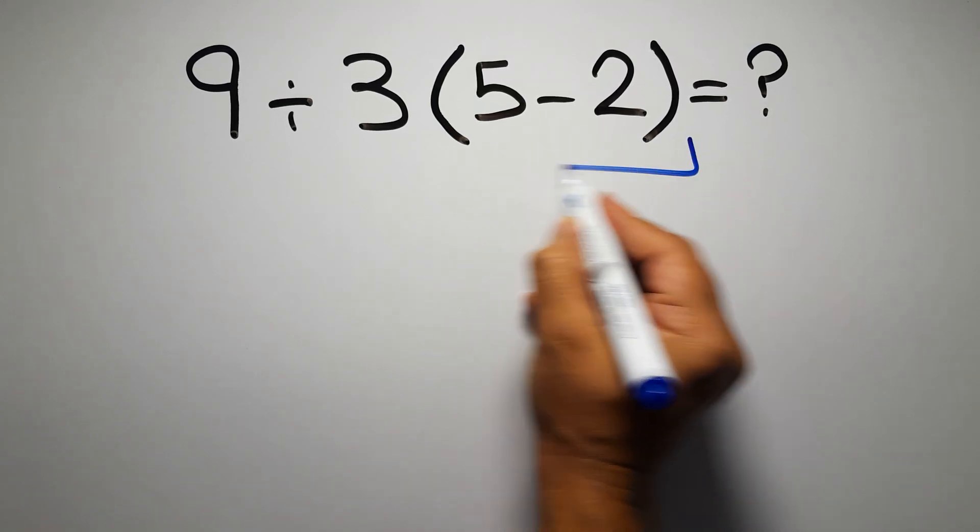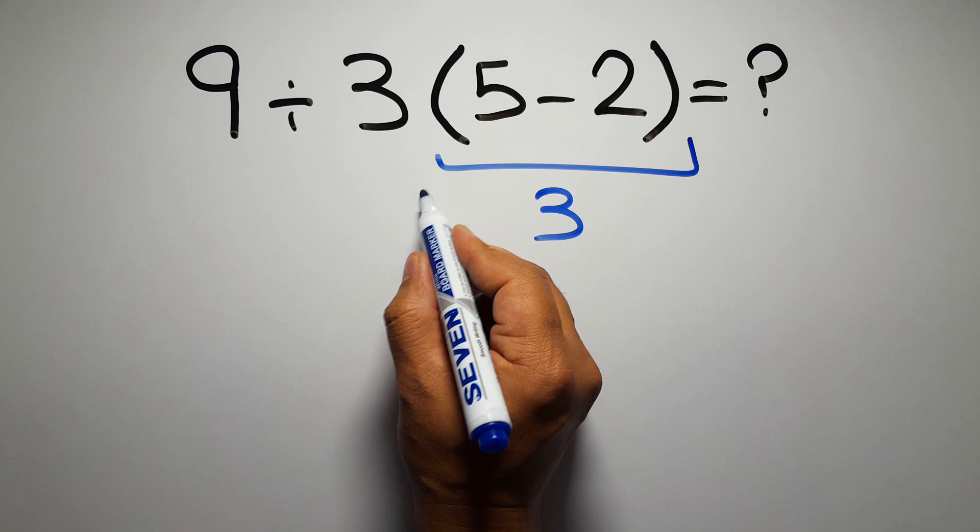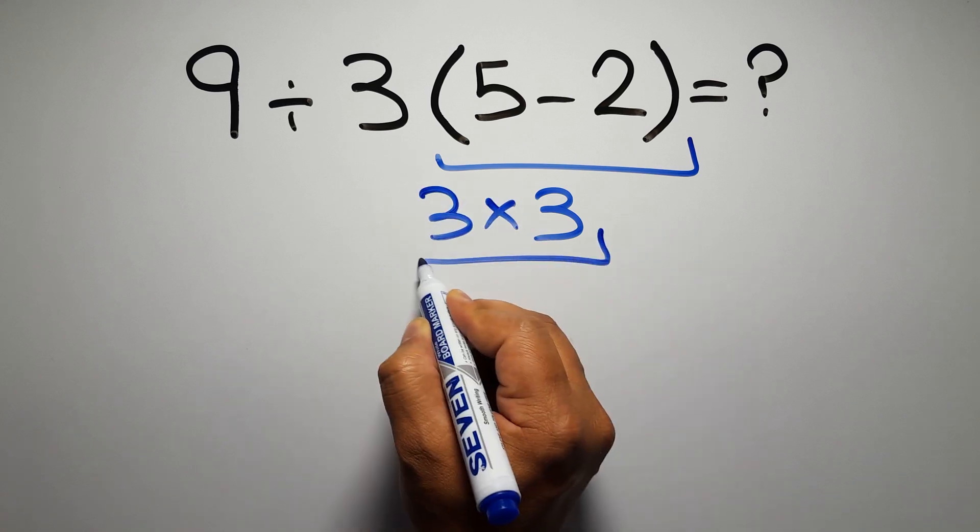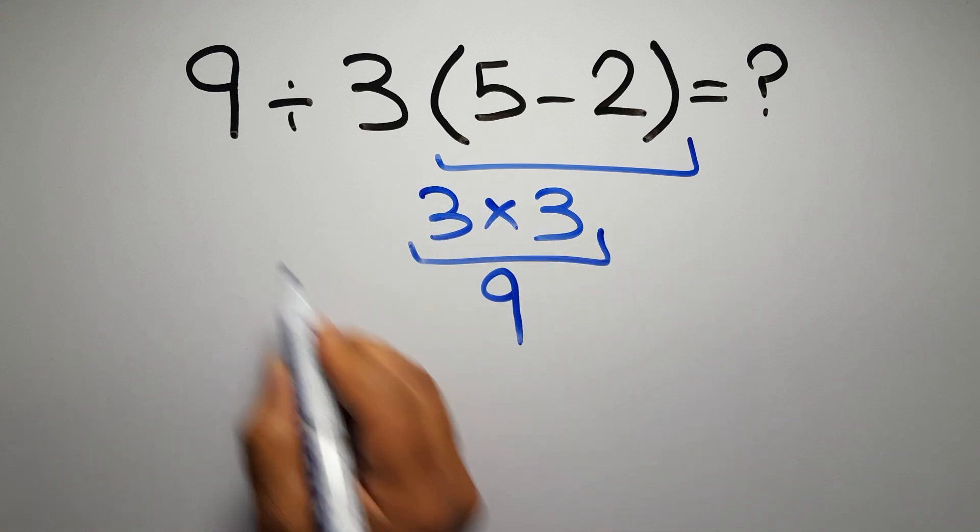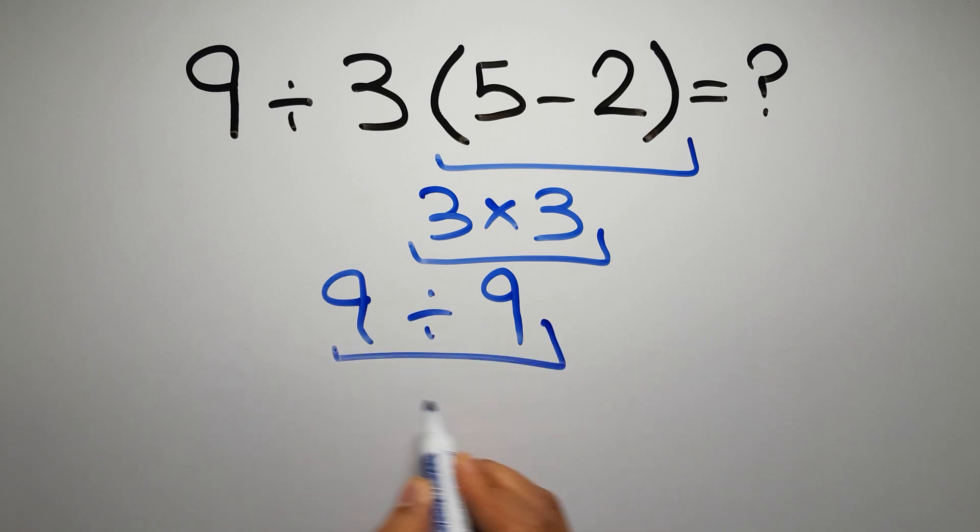5 minus 2 gives us 3, and 3 times 3 equals 9, so 9 divided by 9 gives us 1. But this answer is not correct.